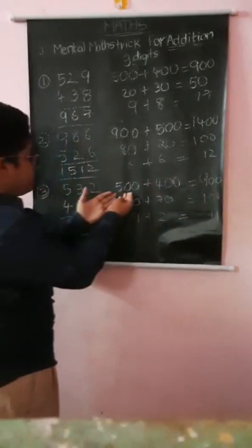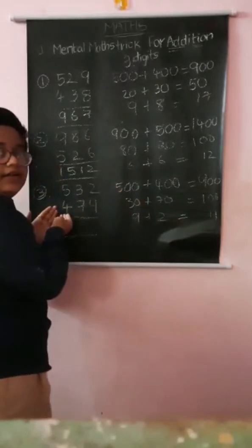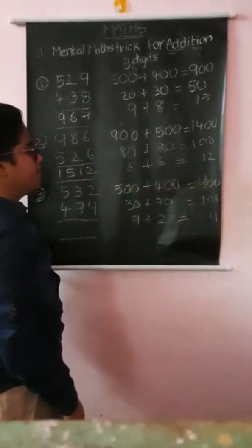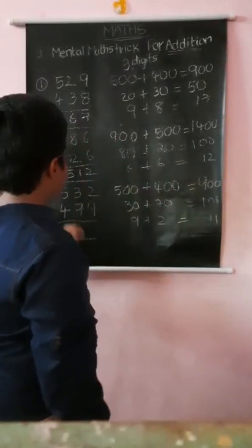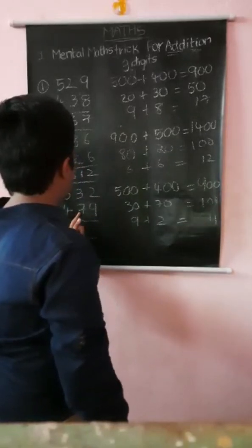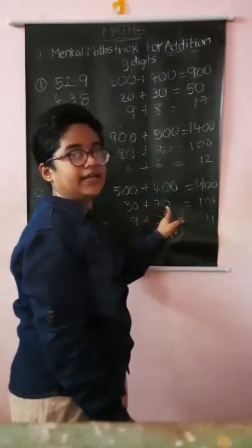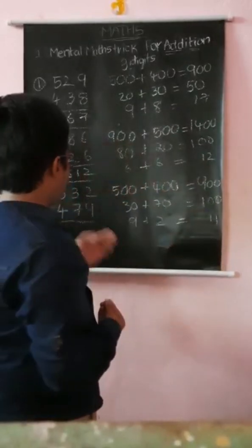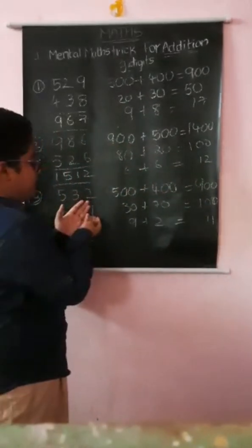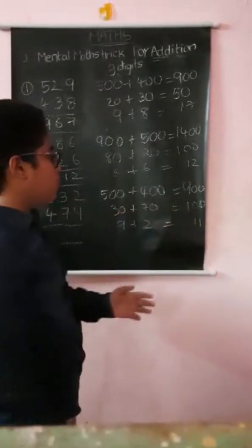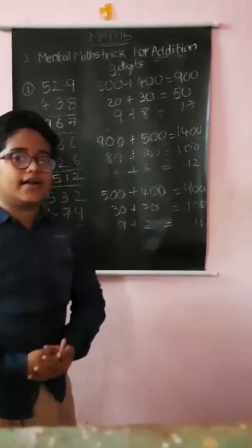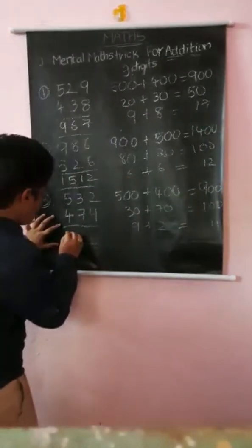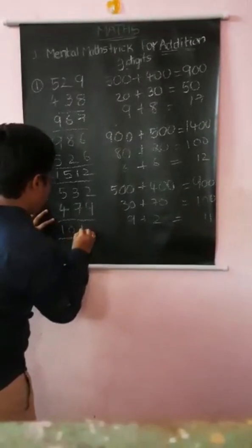In the hundreds place, the numbers give 500 plus 400. Tens: 30 plus 70 equals 100. Ones: 9 plus 2 is 11. Now 900 plus 100 is 1000. You know that 1000 plus 11 is 1011. That is the answer.